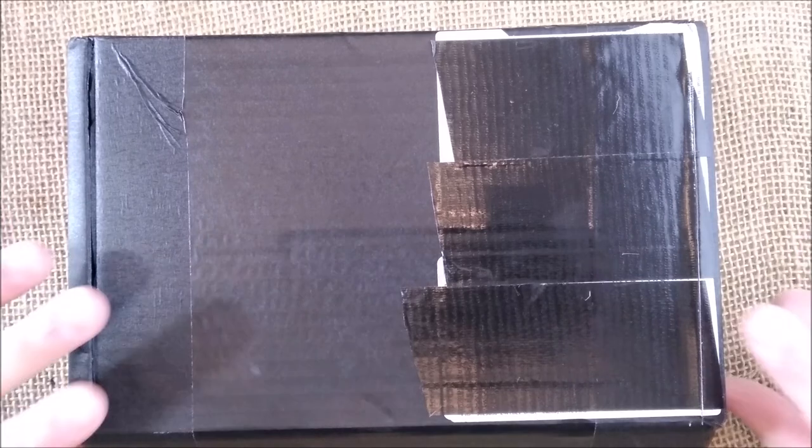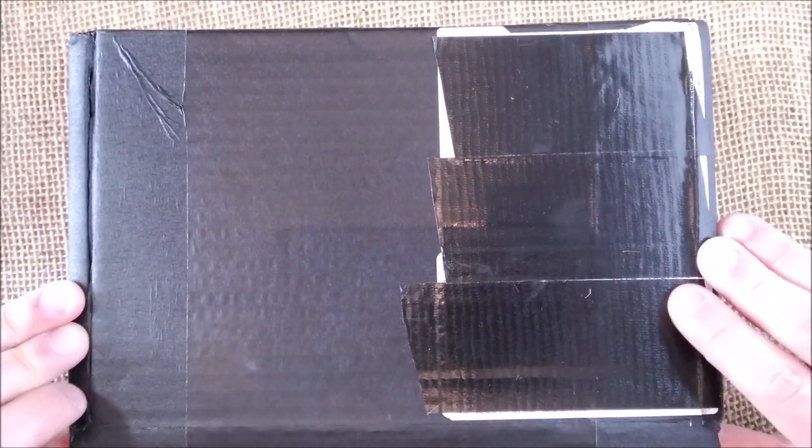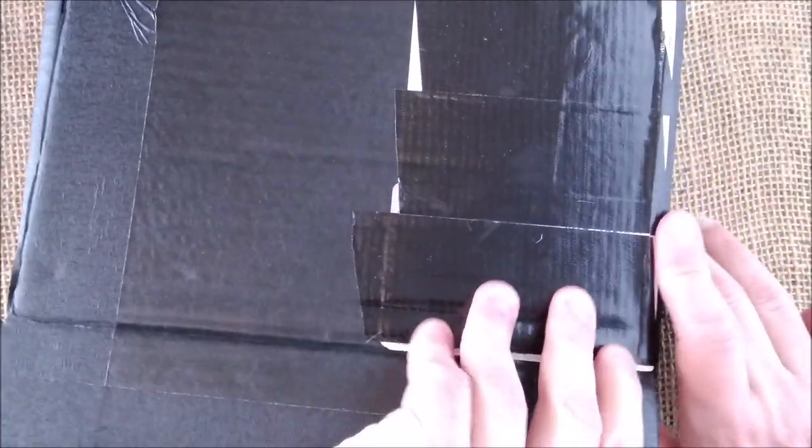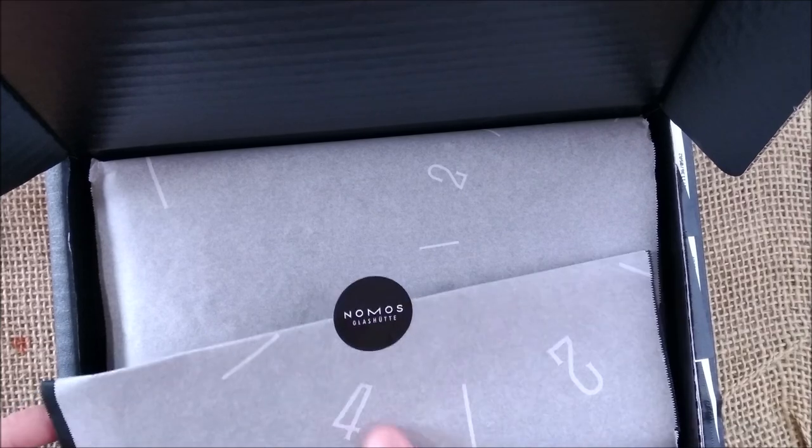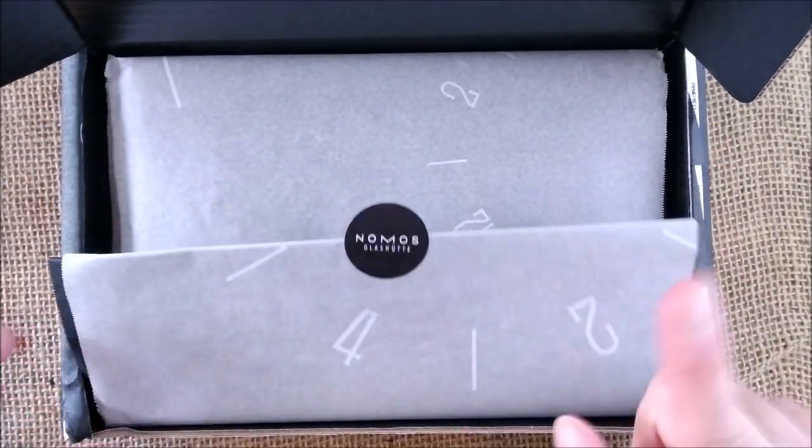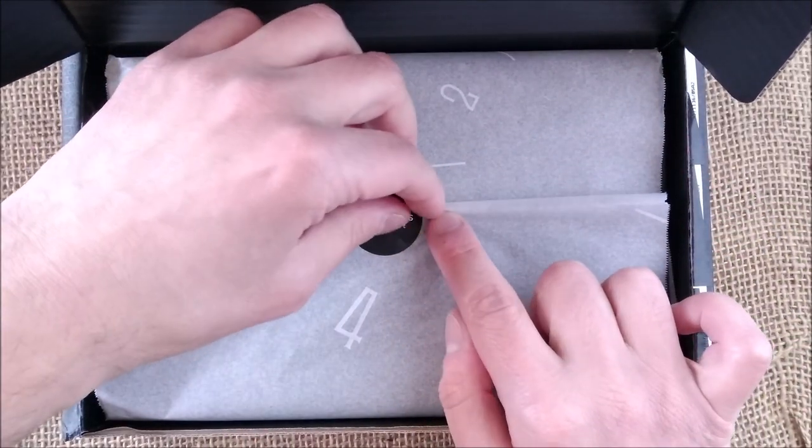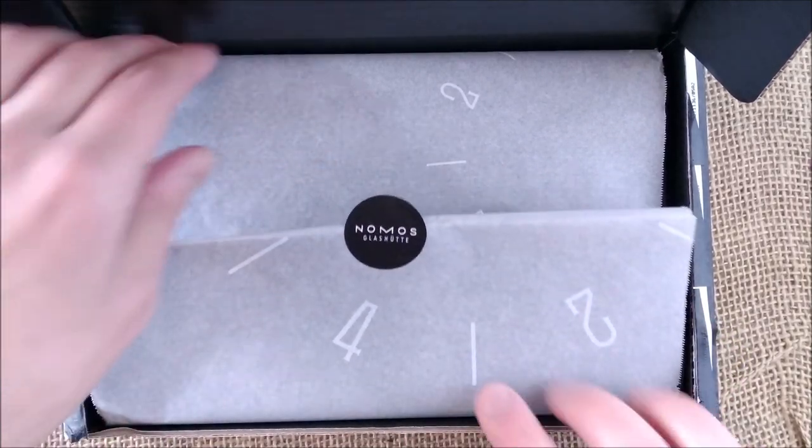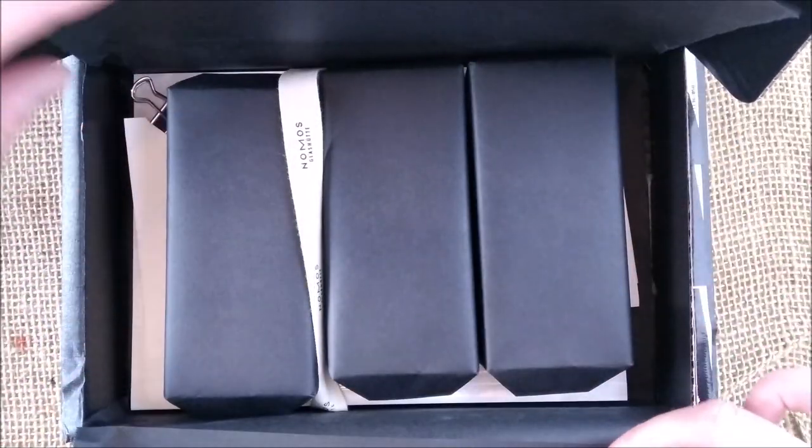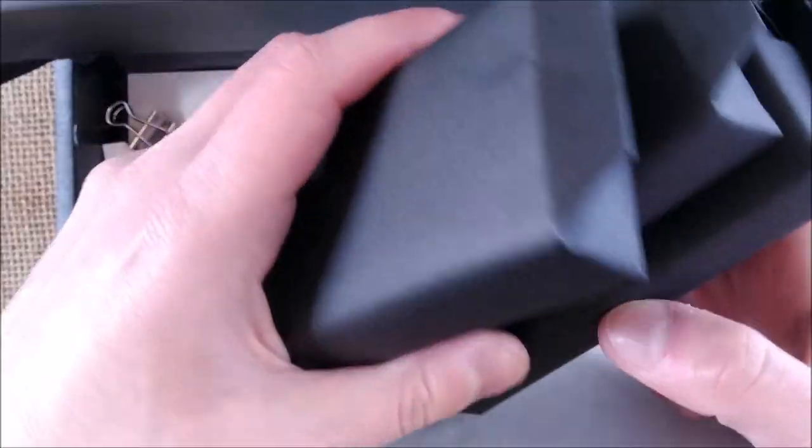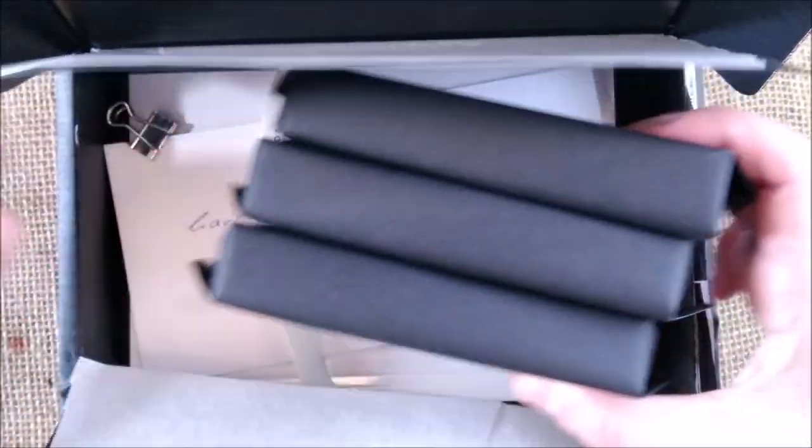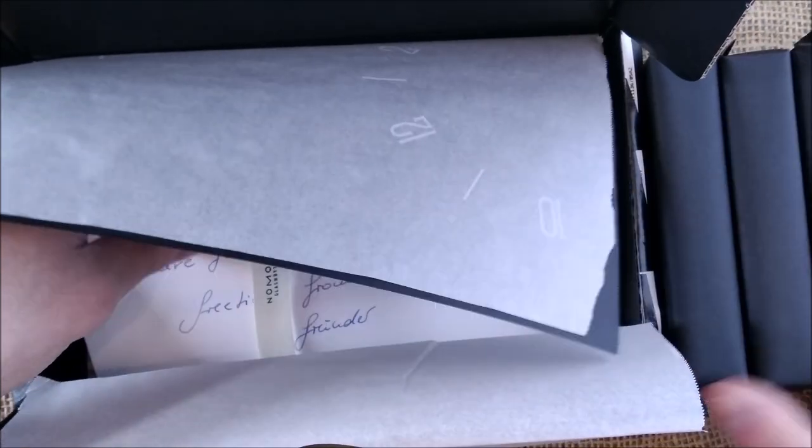The box is open and let's see what we have here inside. So first you can see in this wrapping paper it's very nice, you have the watch numbers which is interesting. This is the logo of the Nomos store or Nomos brand. So let's open this and we have inside three packages all very nicely packed in black kind of silk paper.